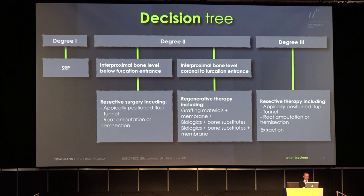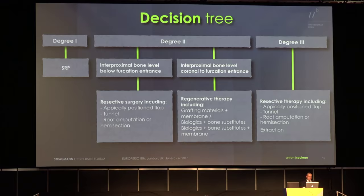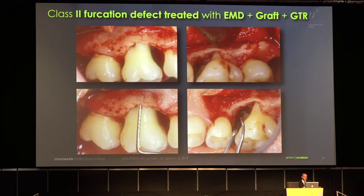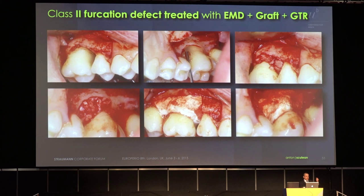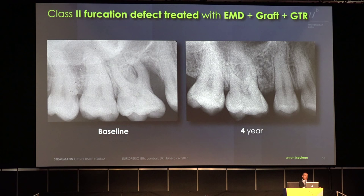Our decision tree: Class I — no surgery needed, scaling and root planing. Class II — we evaluate the level of the bony peaks mesial and distal to the furcation entrance. If the bony peaks are below, no regenerative surgery is indicated. If they are coronal, then we go into a regenerative approach, which in our clinic is always combination therapy. Class III is a resective approach or maybe extraction. One clinical example: this very extensive case where the palatal plate is missing and we have a class II furcation interproximally. Using a combination of autogenous bone, enamel matrix proteins, and a collagen barrier, we found the best outcomes, stable up to four years.